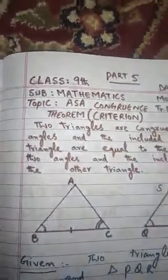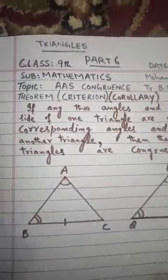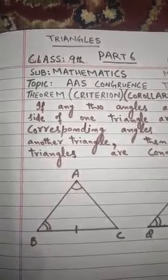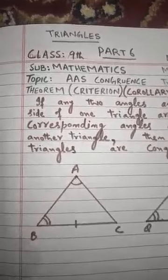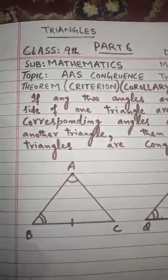The angle-angle-side congruence theorem is a corollary because we are using the previous theorem — which we proved in lecture number five — in proving it. We are using another theorem for this theorem to prove it.